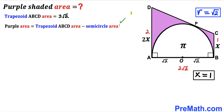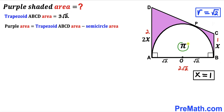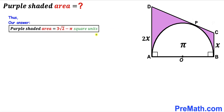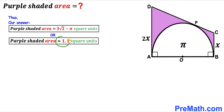For our final step, recalling that purple shaded area = trapezoid ABCD area − semicircle area, we substitute: 3√2 − π. After all calculations, the purple shaded area turns out to be 3√2 − π square units, which is approximately 1.1 square units. That's our final answer.